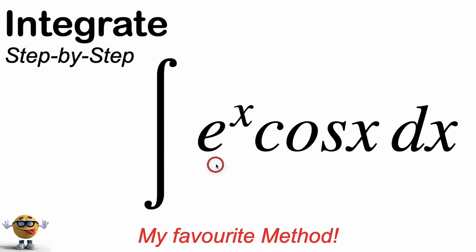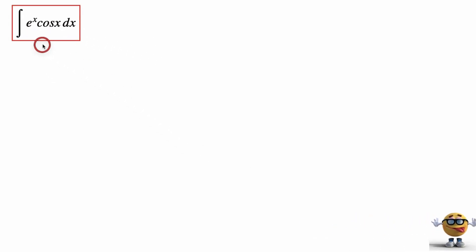My friends, we're going to evaluate e to the x times cos of x using my favorite method. We normally do this using integration by parts twice, which is a little tricky, but my favorite way is to sub in Euler's formula.